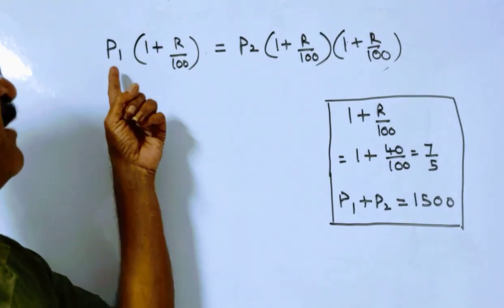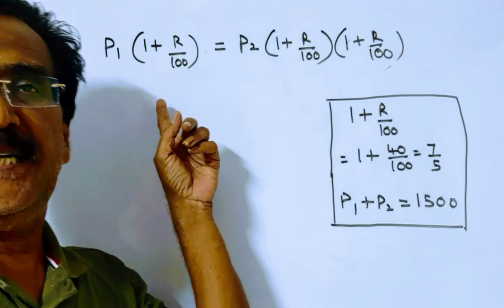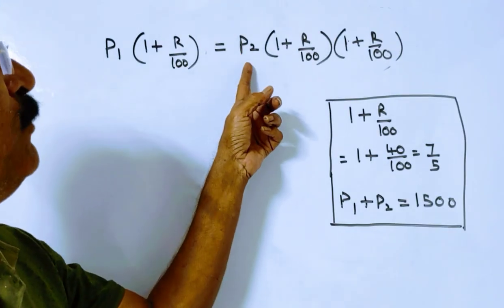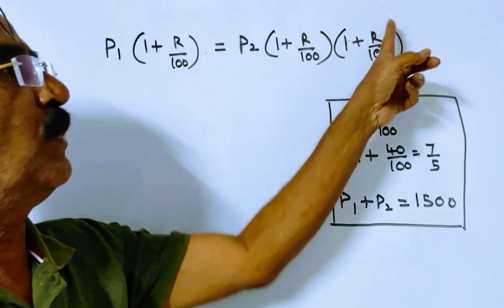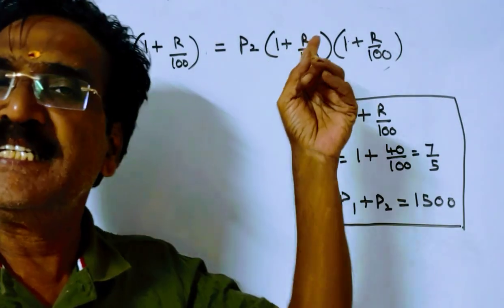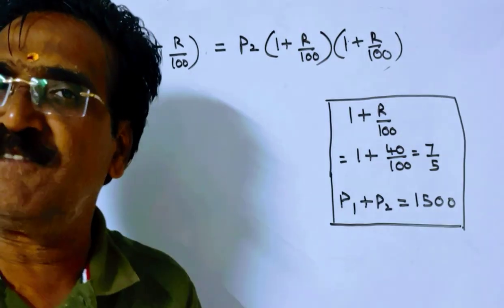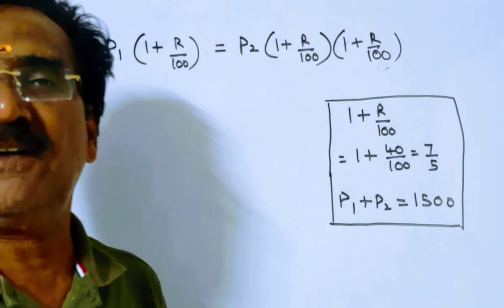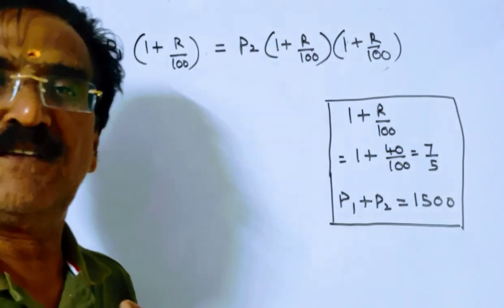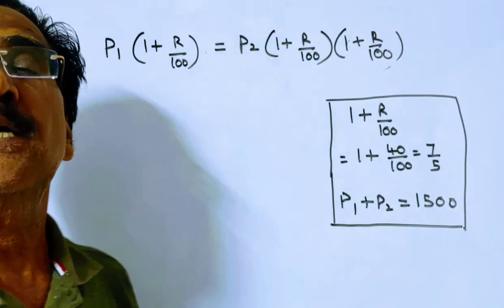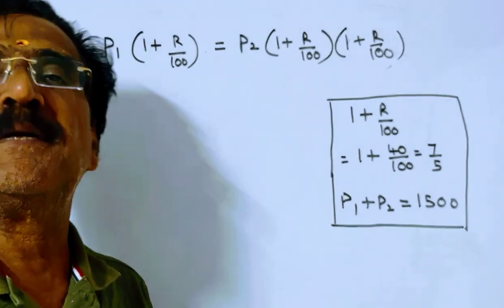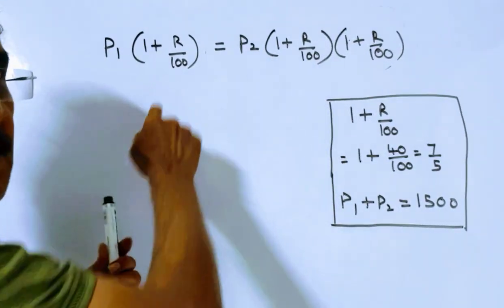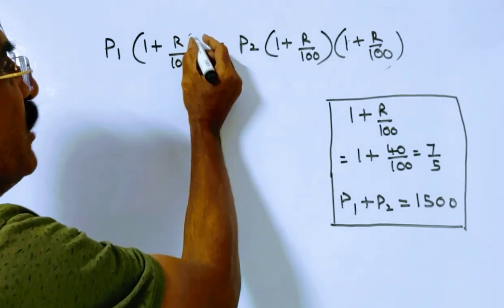See friends, P1 into 1 plus R by hundred, this is the installment paid at the end of the first year. And P2 into 1 plus R by hundred into 1 plus R by hundred, this is the installment paid at the end of the second year, where P1 is the present worth of the installment paid at the end of the first year, whereas P2 is the present worth of the installment paid at the end of the second year. Friends, these two installments are equal, equal annual installments.